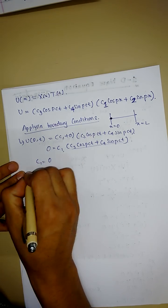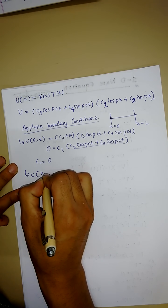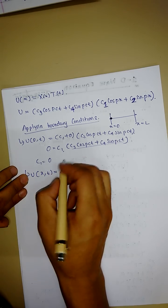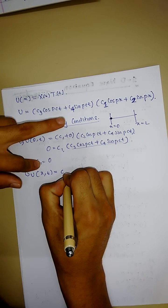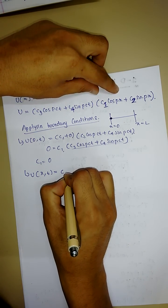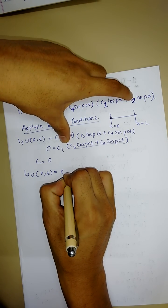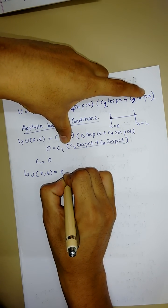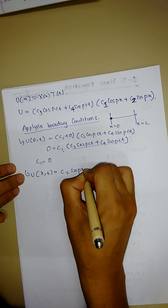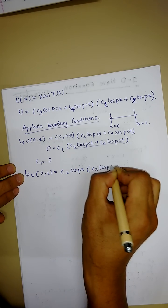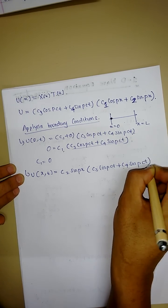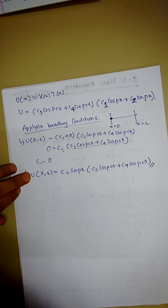With c₃ = 0, the equation simplifies. The term with cos(px) drops out, and we are left with: u(x,t) = c₂ sin(px) · [c₃ cos(pct) + c₄ sin(pct)], which is our simplified expression after applying the first boundary condition.